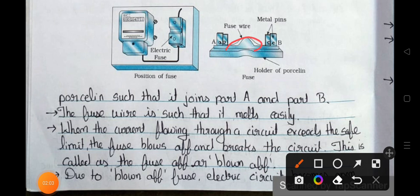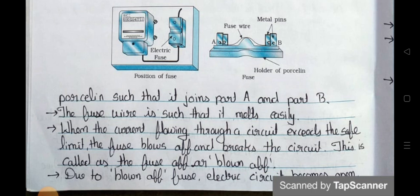The fuse wire is such that it melts easily when the current flowing through a circuit exceeds the safe limit. The fuse blows off and breaks the circuit. This is called as the fuse off or blown off. Due to blown off circuit, the electric circuit becomes open.